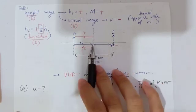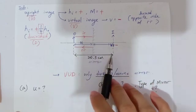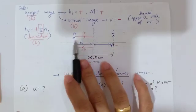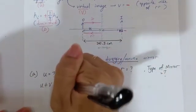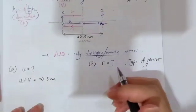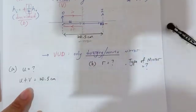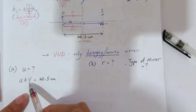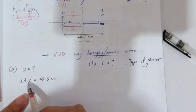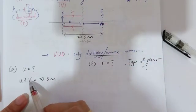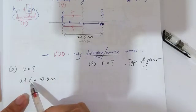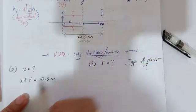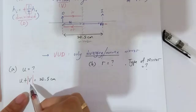How to find object distance? We know that U plus V — object distance plus image distance — is equal to 20.5 cm, because 20.5 cm is the distance between object and image. However, our V is negative, so we cannot just add up like this. Because V is negative, if we just add U plus V, it becomes U minus V, and it's no longer 20.5 cm — that would be wrong. So we must take the modulus of V to make it positive.